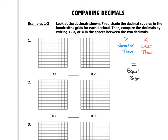Let's look at the decimal 0.39, which means 39 hundredths. This grid is a 10 by 10 grid with 100 squares, so to represent 39 hundredths I shade 39 out of 100 squares. I shade the first column — that's 10 squares — then the next column for 20, then the next for 30, and then I shade 9 more squares in the fourth column, everything but the last square. So I've now shaded 39 out of 100, which is the decimal 0.39.